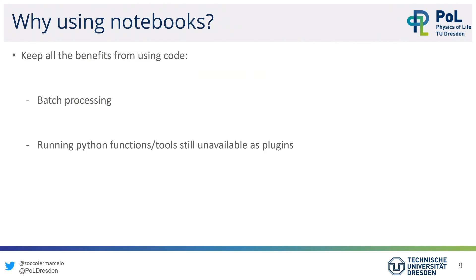When you are using Jupyter Notebooks, you keep all the benefits from using code. It mainly allows you to do batch processing more easily. As soon as you've done your workflow — trying it out in the Napari assistant or some other tool — maybe some plugins allow batch processing and others don't. Python is very good at that: if you have a function containing your workflow, you could put it in a loop and run it for many files in a folder. That's batch processing, and Python is native for those kinds of things.